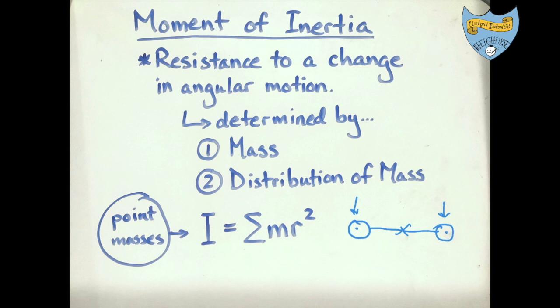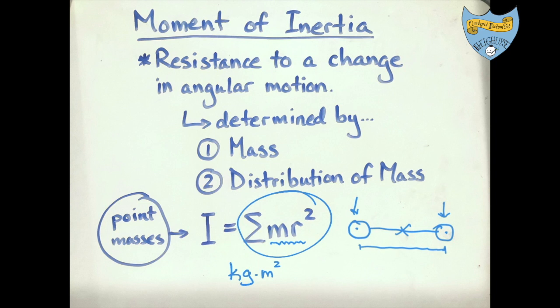Moment of inertia is measured in kilogram meters squared. Where we get that unit from is just the formula itself. If you're taking a test and can't remember the units, don't panic — it's right there in the formula. Mass is measured in kilograms, distance is measured in meters and it's squared, therefore the unit is kilogram meters squared. Even if you forget it, you can derive that unit using the equation.